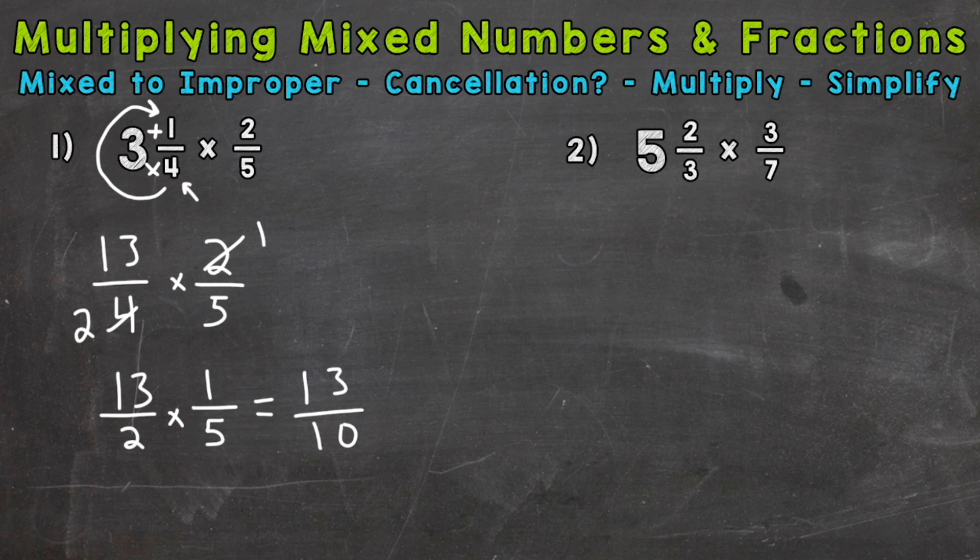So we end up with an improper fraction here. So let's change this back to a mixed number for our final answer. So we do that by doing the numerator 13 divided by 10. So how many whole groups of 10 out of 13? Well, one. And we have a remainder of three. So that's the numerator of our fractional part. And we keep the denominator of 10 the same.